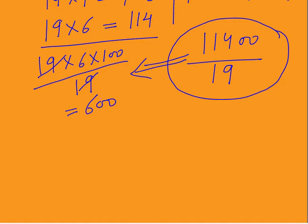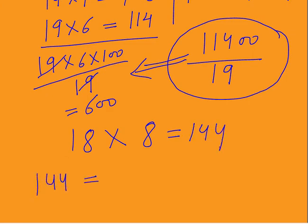It is very important to understand tables from 1 to 20. For example, 18 times 8 is 144. When 144 appears in an exam, you should be able to break it as 18 times 8 — or equivalently 16 times 9, which is also 144. You have to learn tables only from 1 to 20 in both ways.